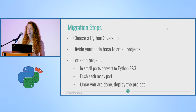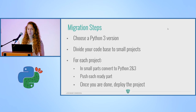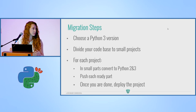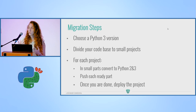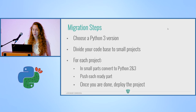First, we'll go over the migration steps at a general overview, then dive into the actual plan. The first thing you should do is choose your Python 3 version, which is dependent on what external libraries you use. You probably want to choose the highest available Python version that supports all your libraries. Next, divide your code base into small projects, because migration happens for each project individually. The idea is you migrate each project on its own: convert it into Python 2 and 3 compatible code, push each part once it's ready, and when done, deploy that project and move on to the next.